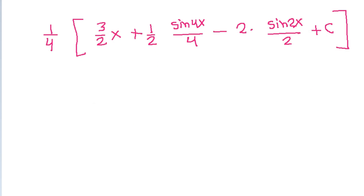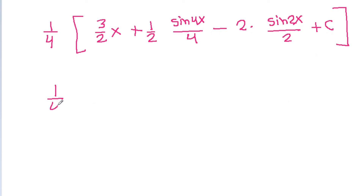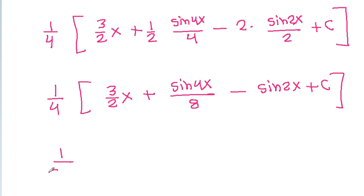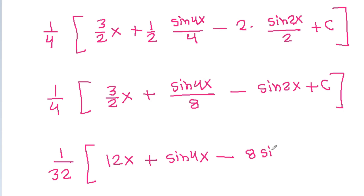So we get (1/4) times (3x/2 + sin 4x / 8 minus sin 2x) plus c. Multiplying through, and expressing over a common denominator of 32, we get the final answer: (1/32)(12x + sin 4x minus 8 sin 2x) plus c.